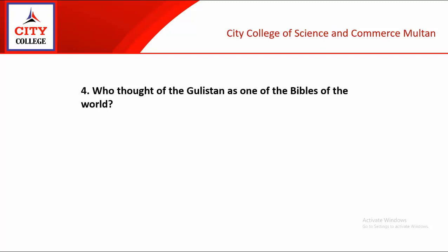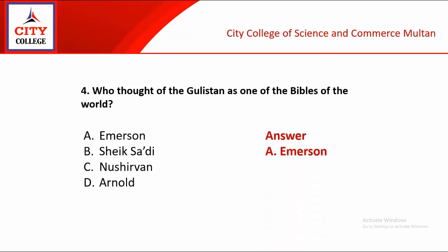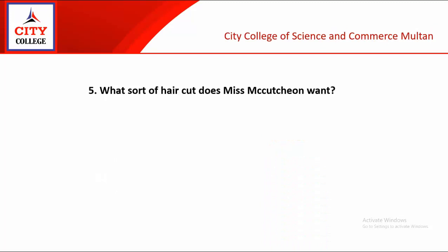4th objective: Who thought of the Gulistan as one of the Bibles of the world? Given options are Emerson, Sheikh Saadi, Nosherwan, Arnold. And the correct option is A, Emerson.